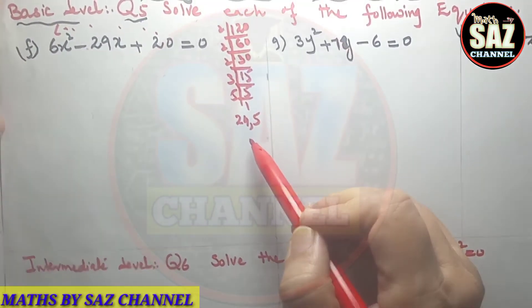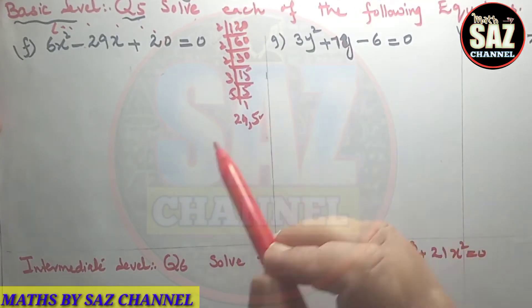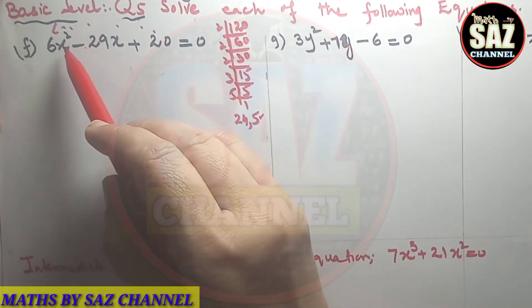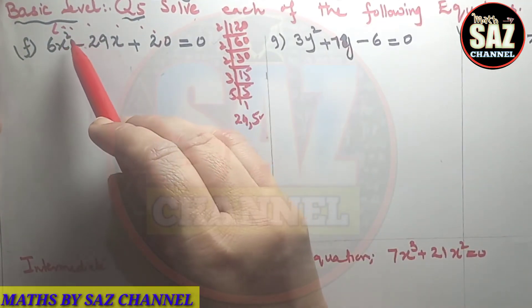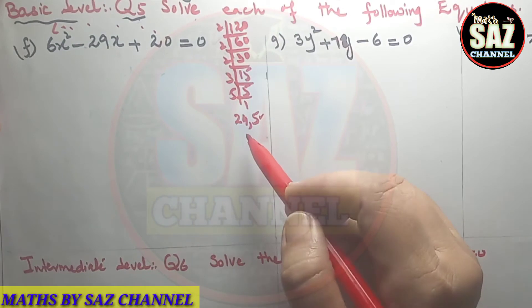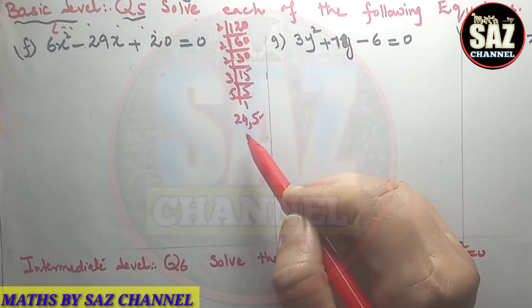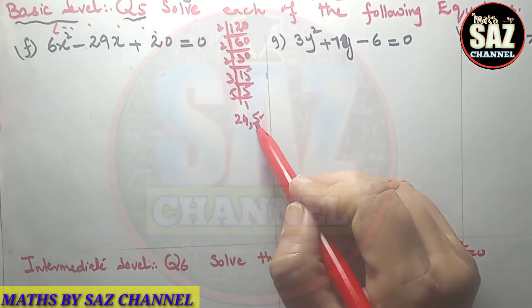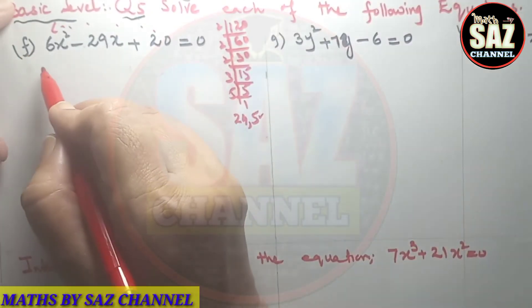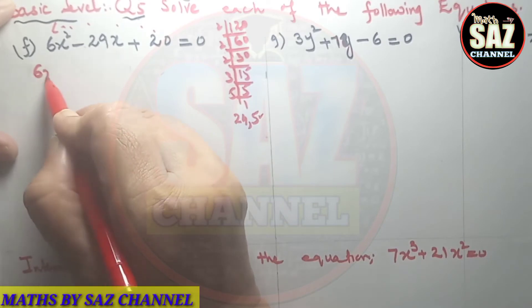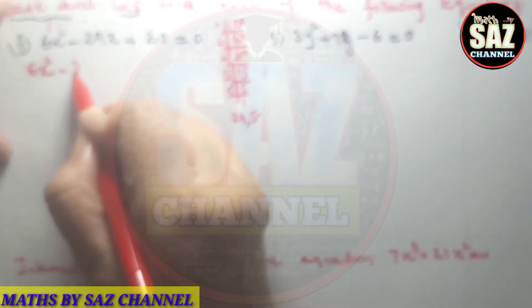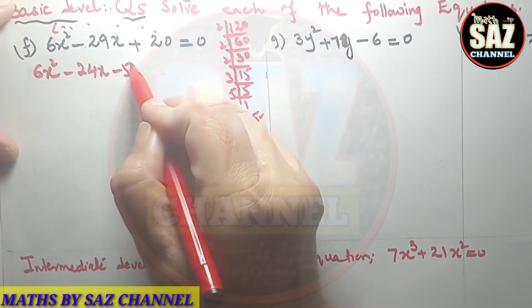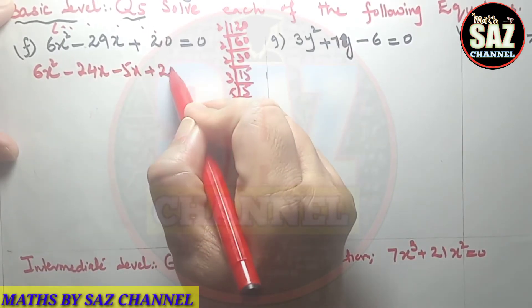Now the problem is that 29 has a negative sign, and the product is positive. So both factors will have a minus sign. Moving to the solution: 6x² - 24x - 5x + 20 = 0. The middle term is now divided into two parts.